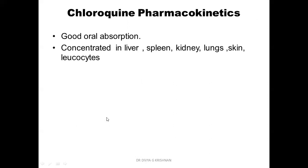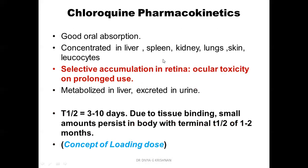Regarding pharmacokinetics: chloroquine has good oral absorption and is given orally. It has a high cumulative property — it gets concentrated in the liver, spleen, kidney, lungs, skin, and even WBCs. It is very highly accumulated in the retina, so ocular toxicity can occur on prolonged use. Every time chloroquine is given for a prolonged period, ensure the patient undergoes periodic retinal testing. It is metabolized in the liver and excreted in the urine. The half-life is 3 to 10 days — very long — and because it is bound to so many tissues it can persist in the body for months. Because of this long half-life, it is often given as a loading dose to bring about rapid action.